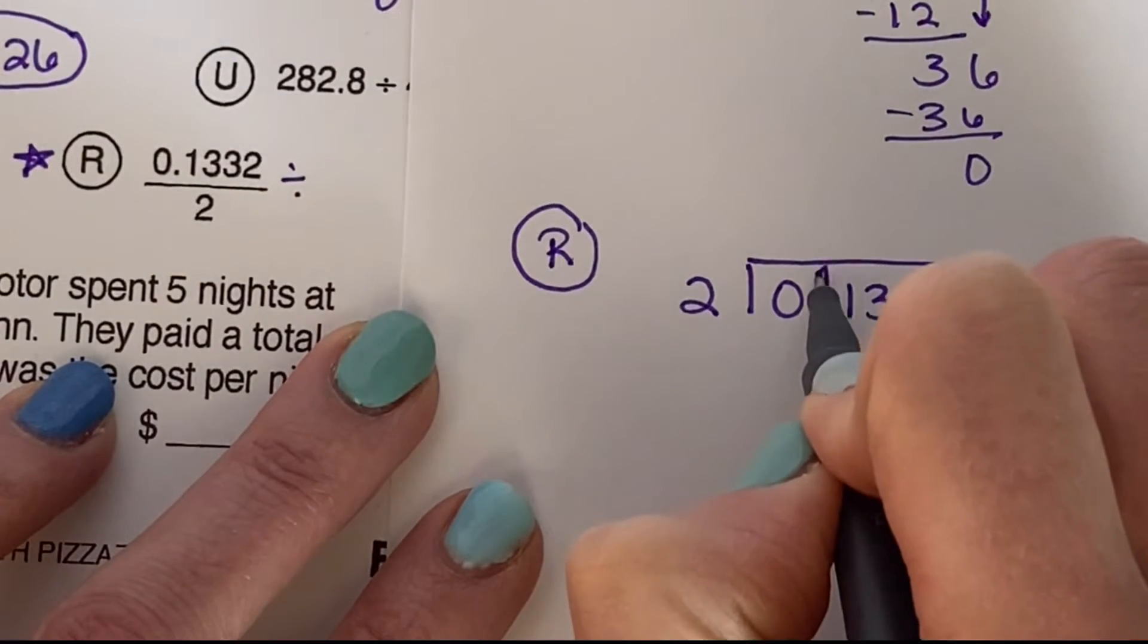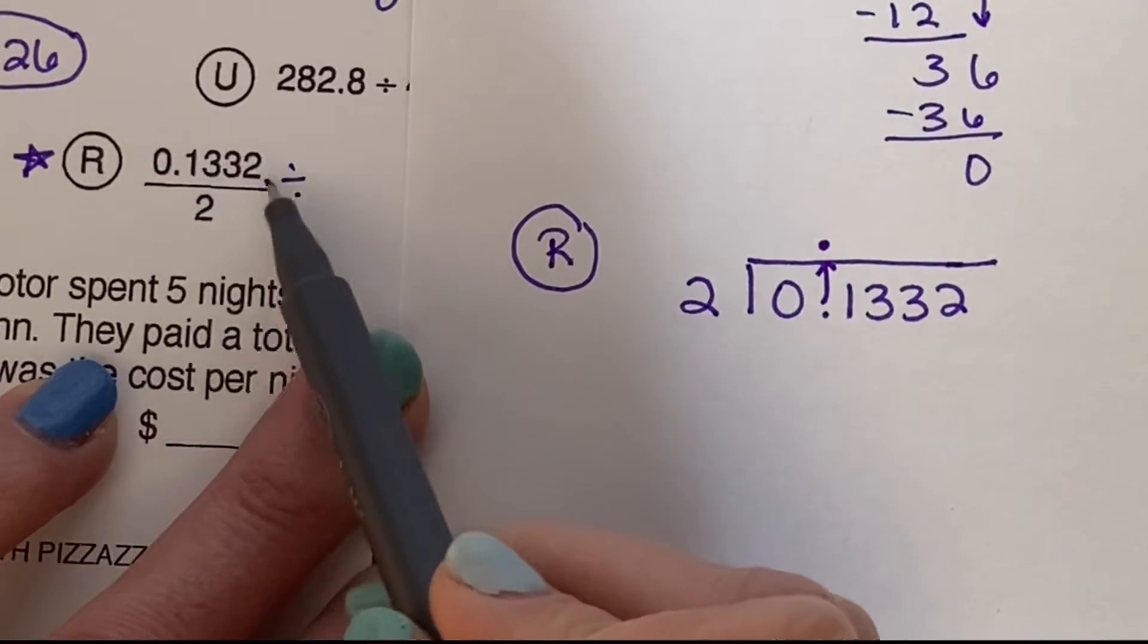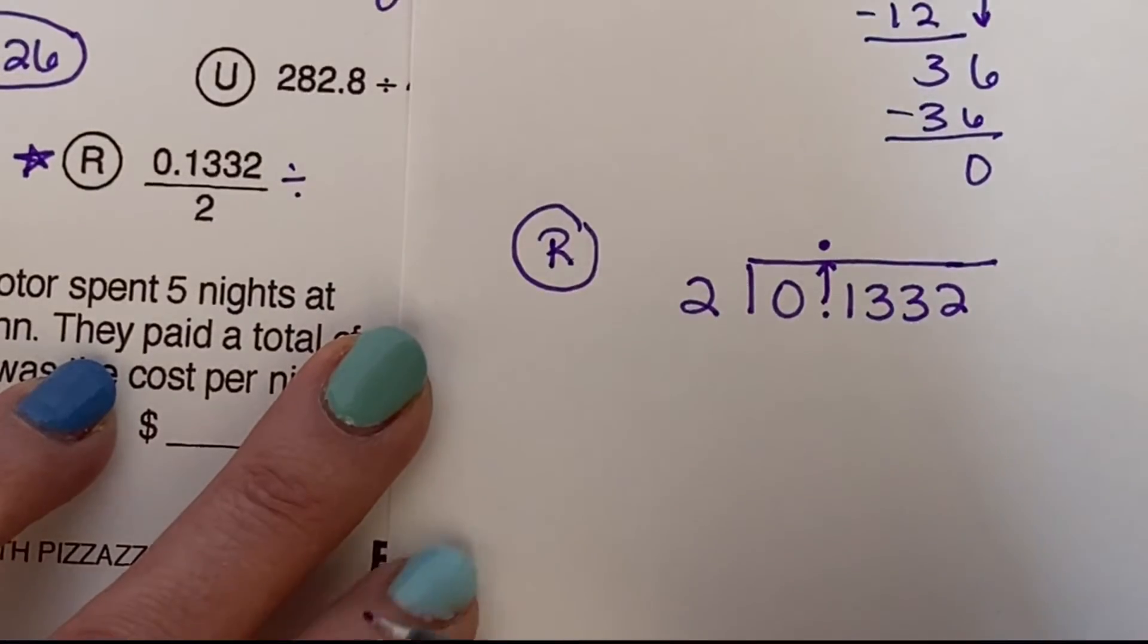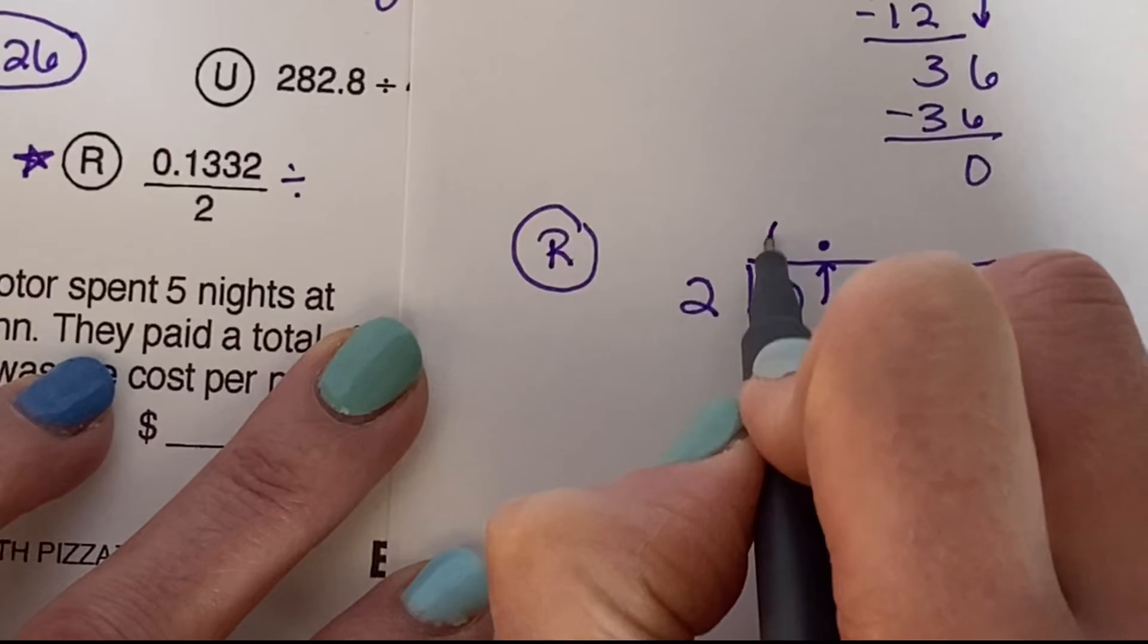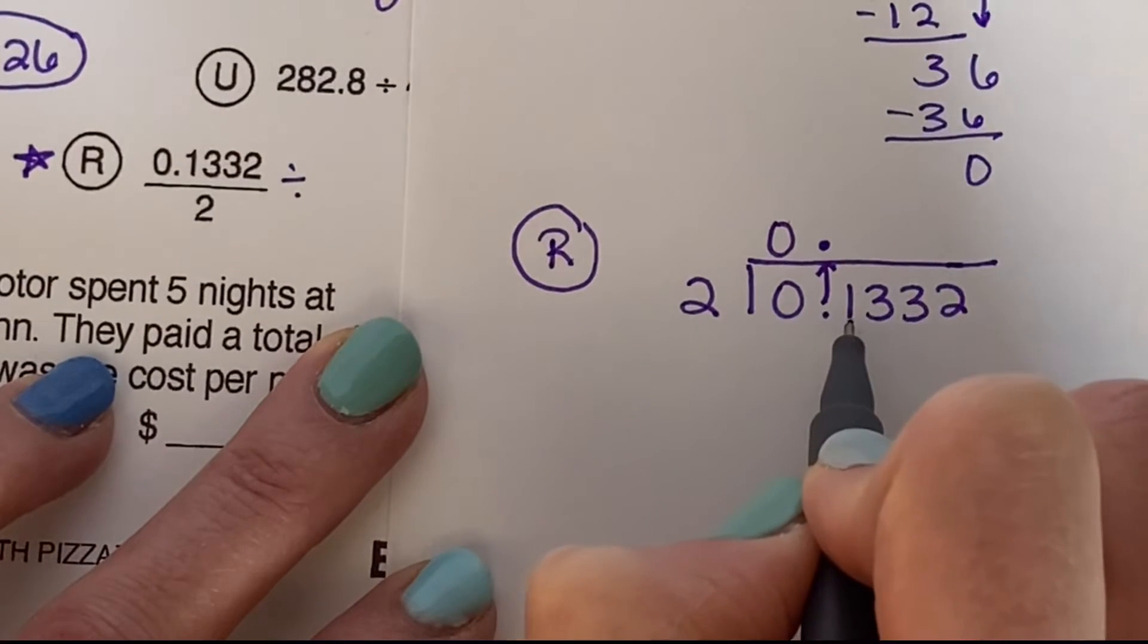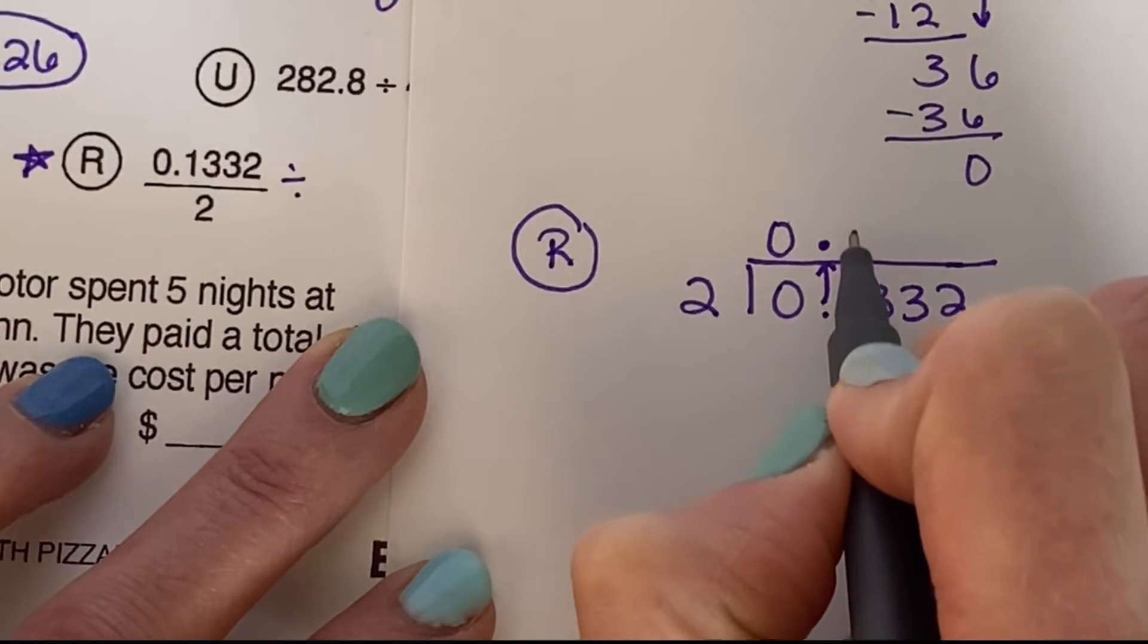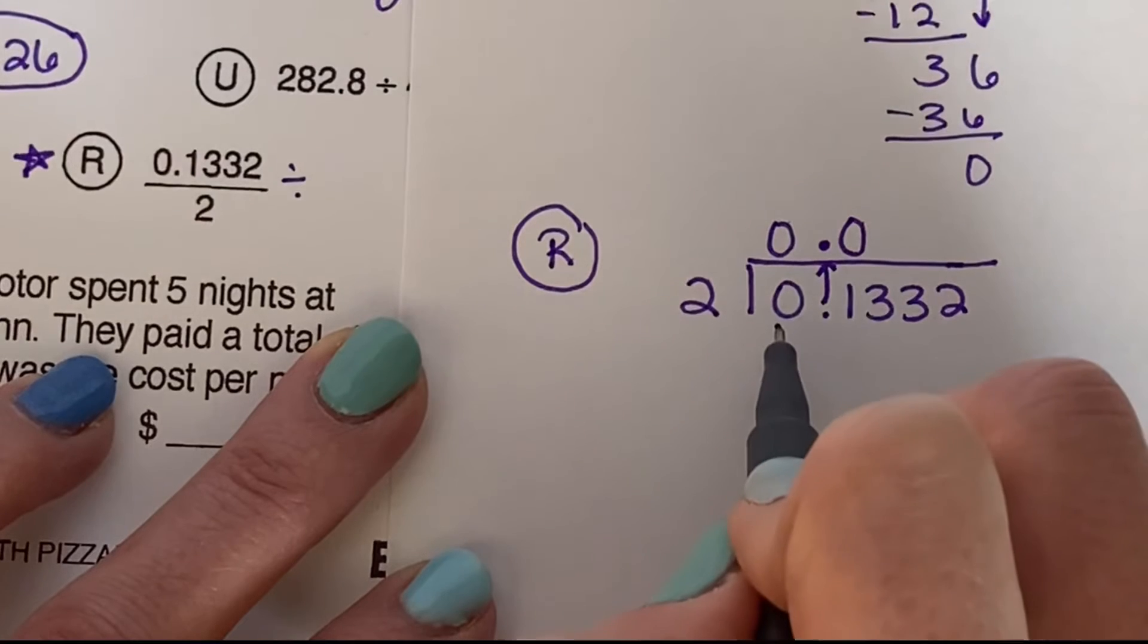Now that we have it written down, I'm going to go ahead and bring our decimal point up. And notice, basically, I'm taking a pretty small number and dividing it by 2 or halving it. I'm going to get even a smaller number. Okay, 2 goes into 0, 0 times. 2 goes into 1. 2 doesn't go into 1. It goes in 0 times. So my first number is going to be a 0. I have 0 tenths. I keep going.